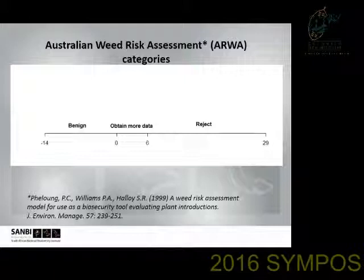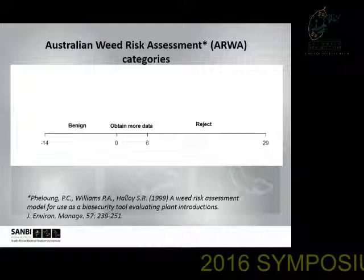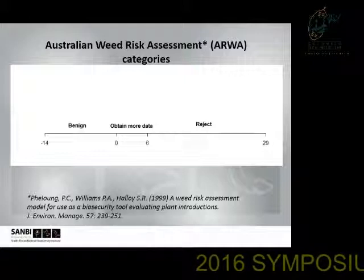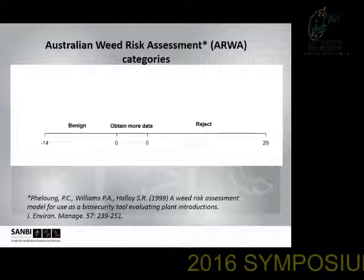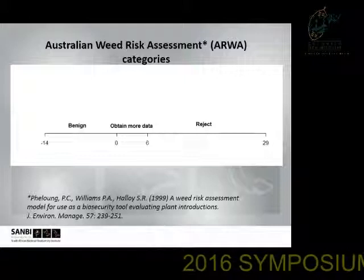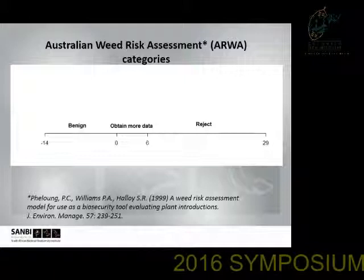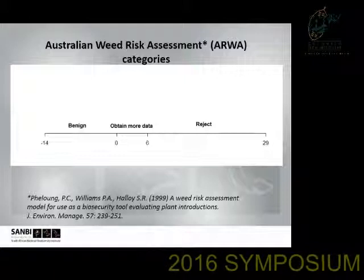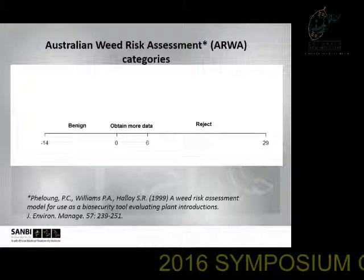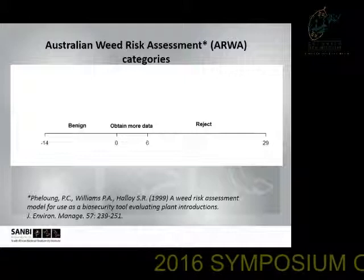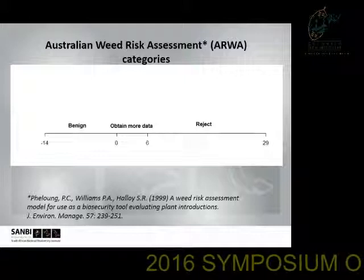Two models were used in our assessment. The first was the Australian Weed Risk Assessment, developed by Pheloung et al. in 1999. It consists of 49 questions evaluating a species' biogeography and ecophysiology, producing a score between minus 14 and 29. Broadly, minus 14 to zero is acceptable; zero to six is data deficient; anything above six falls in the reject category — where what is being rejected is the import permit. The model was designed for screening before import, so we are doing it backwards, but it remains a very useful starting point.